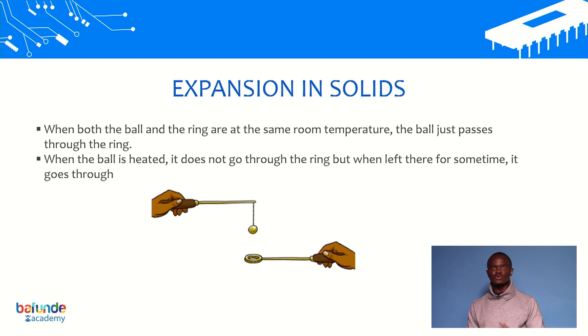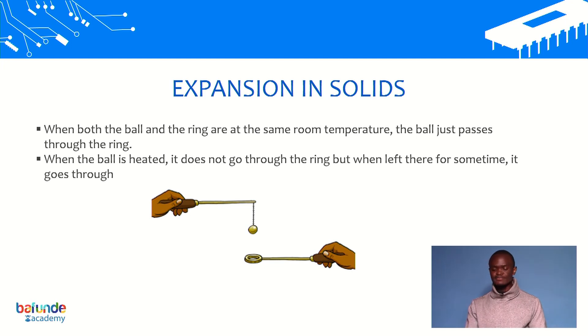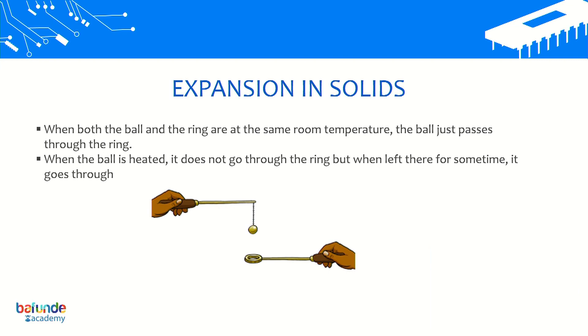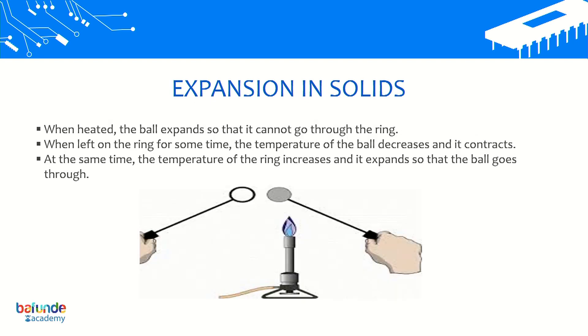After confirming the ball goes through the ring, we then heat the ball and let it settle. We then try to make the ball go through the ring again. The observation is: when both the ball and the ring are at room temperature, the ball just goes through the ring. But after heating the ball, it does not pass through the ring. The reason is that when heated, the ball increases in volume — it undergoes thermal expansion and becomes larger than the ring opening.